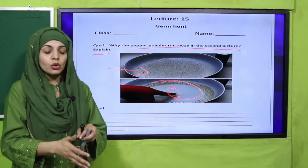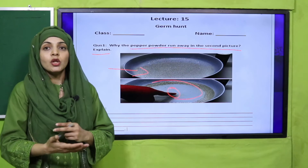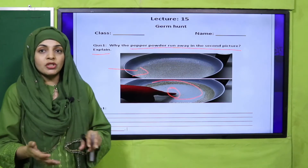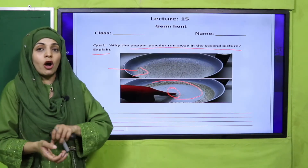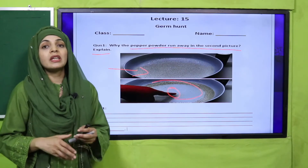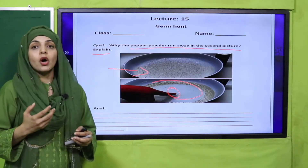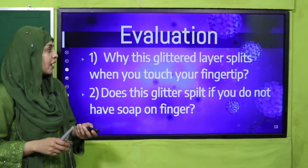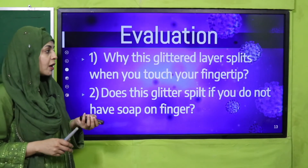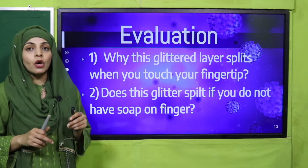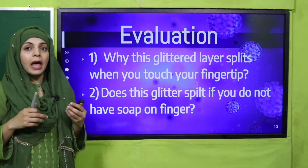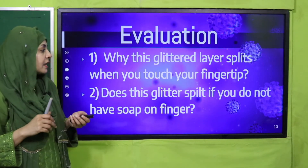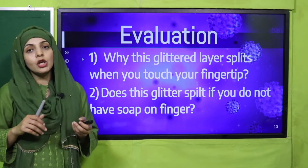When you put soap on your hands, the germs attach to the soap and scatter with the water. Wash your hands more often so germs don't come near you and you don't get infections. For evaluation: why does the glittered layer split when you touch it with soap? Because the water maintains its balance and takes the glitter — or germs — away. If you do not have soap on your finger, the glitter will not split.